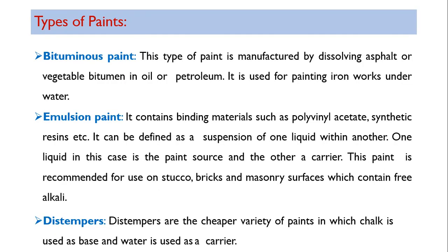Bituminous paint is manufactured by dissolving asphalt or vegetable bitumen in oil or petroleum. It is used for painting ironwork underwater. Wherever corrosion is a problem, bituminous paint is used. It is also a costly paint.